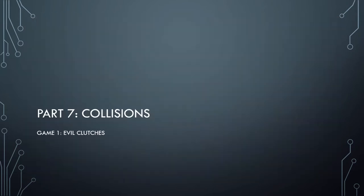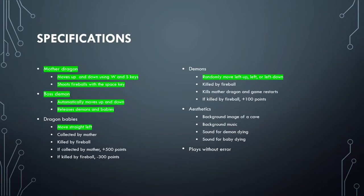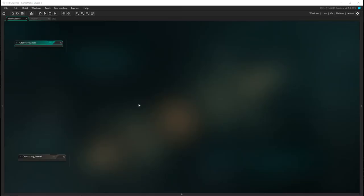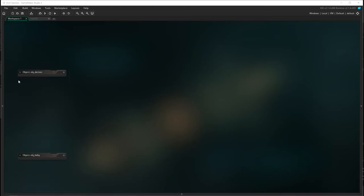In this video we're going to be looking at collisions between objects and how to deal with that particular event handler. So far we have done all the specifications in relation to the mother dragon and the boss demon. We have created our babies and our demons and have them move randomly across. The first lot of collisions we're going to do is for the demon object.